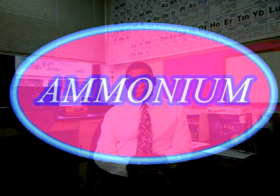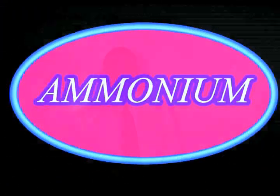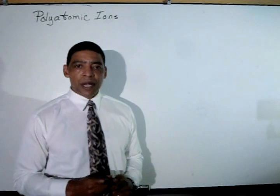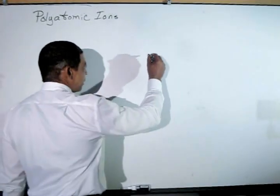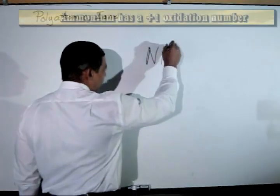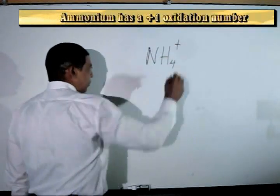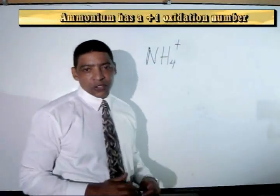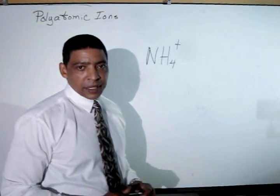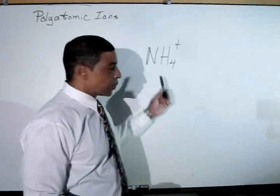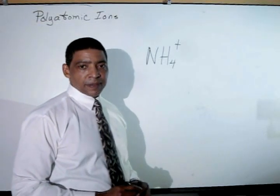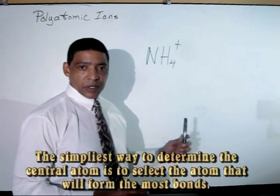In this video, I will explain how to write Lewis structures for a variety of polyatomic ions. Let's begin with one of the simpler polyatomic ions known as ammonium. The chemical formula for ammonium is NH4+. When writing the Lewis structure for this polyatomic ion, the nitrogen will serve as a central atom, since nitrogen will form more bonds than hydrogen.